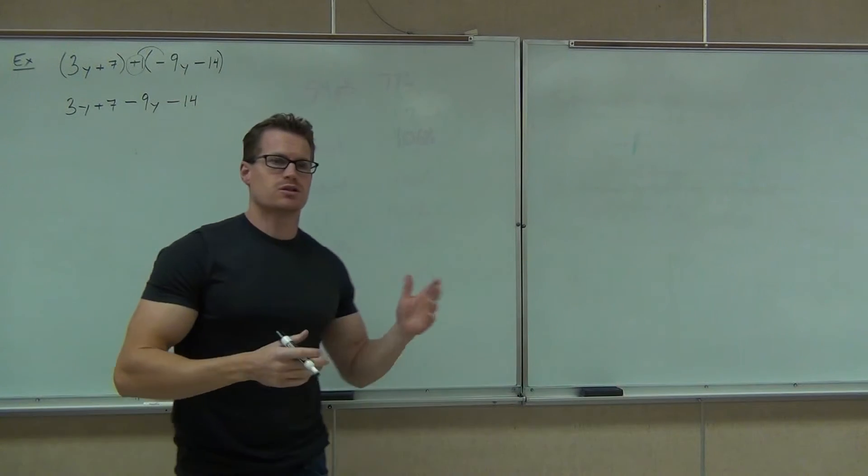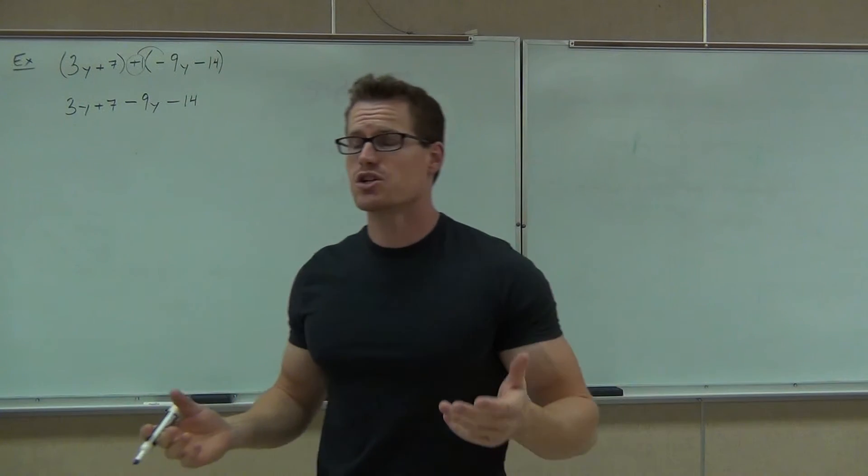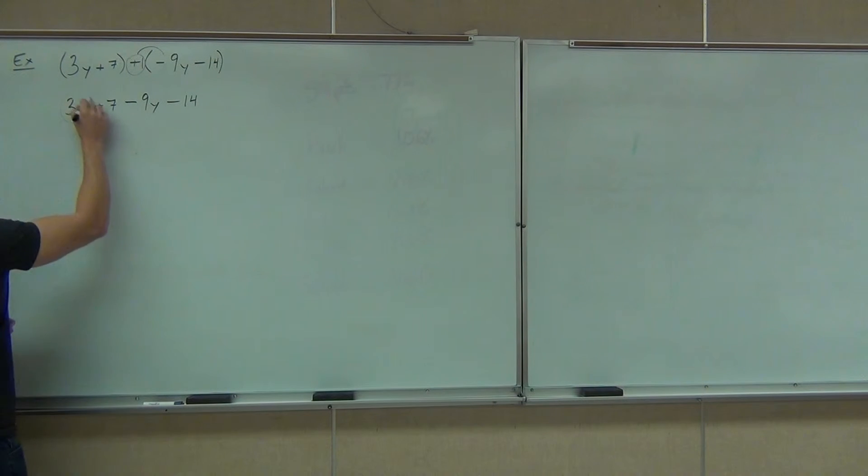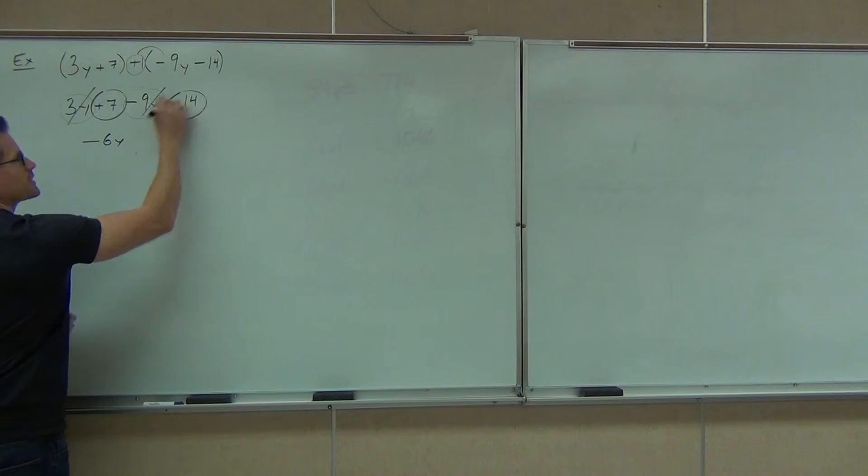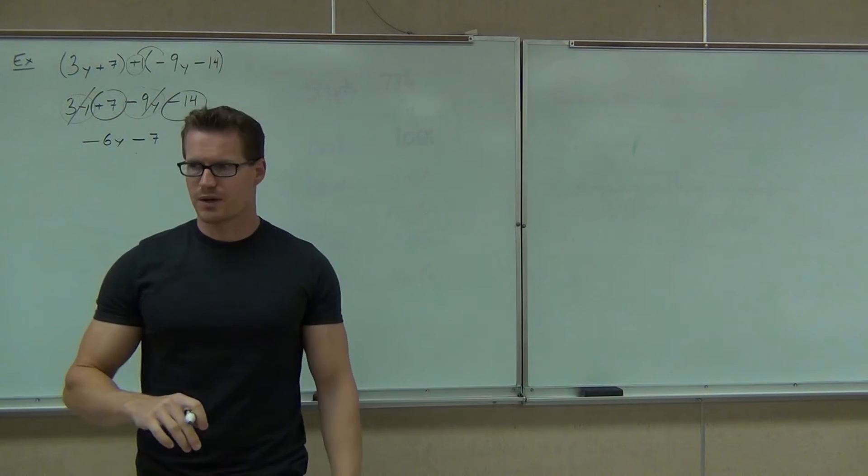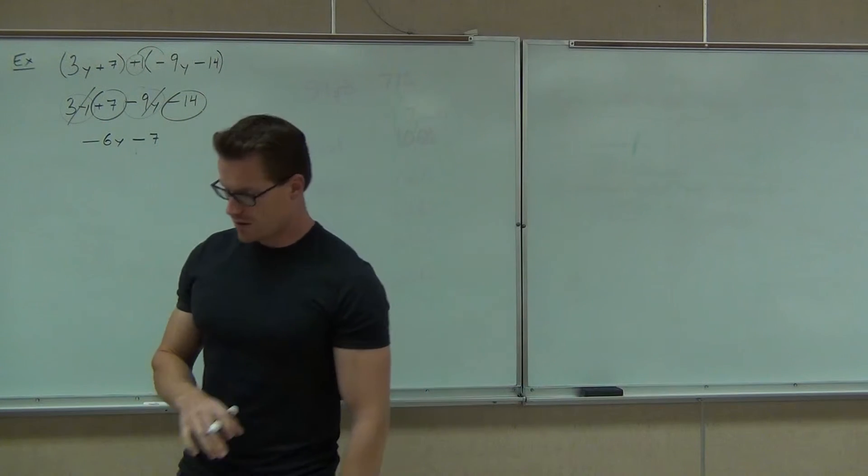After that, it comes down to can you combine like terms? You have to know what like terms are. Do I have any like terms? So if we combine those, I know I'm going to get negative 6y. And if I do my 7 and my negative 14, that's minus 7. And that's as far as you can go. You're done with your problem. Are you guys okay with that one so far?